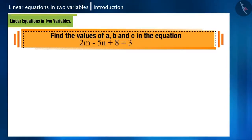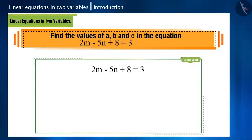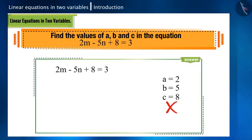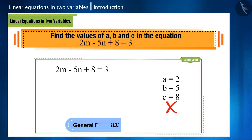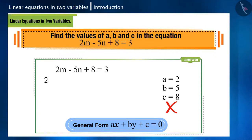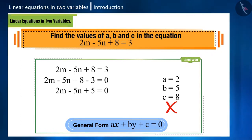Let's take another equation: find the values of a, b, and c in the equation 2m − 5n + 8 = 3. If you think that a = 2, b = −5, and c = 8, then you are incorrect. First, let's write it in its general form: 2m − 5n + 8 − 3 = 0, that means 2m − 5n + 5 = 0. Now we can very easily find the values of a, b, and c from this.